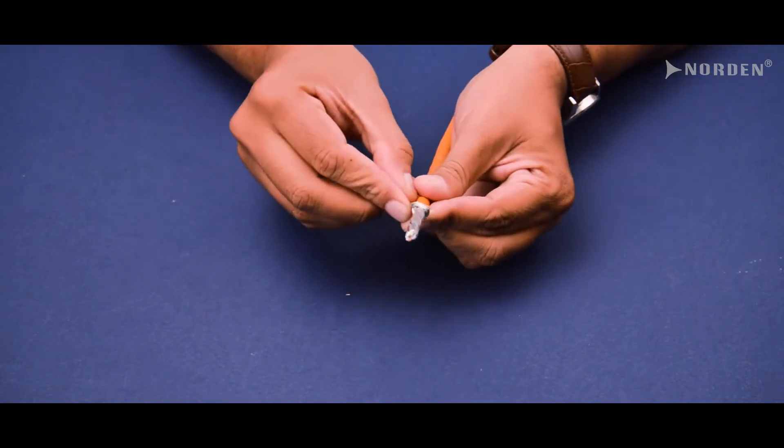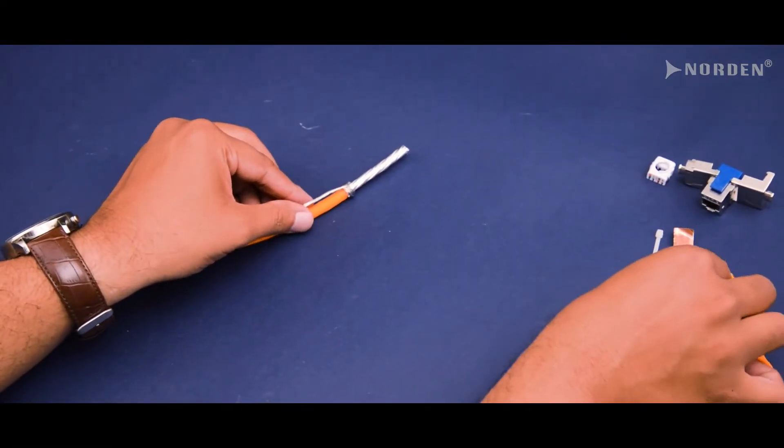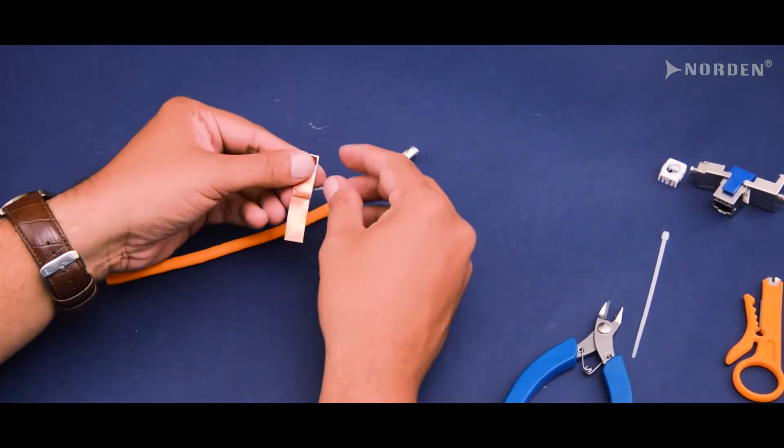Stick the copper tape that is supplied with the jack around the cable over the braid wire.